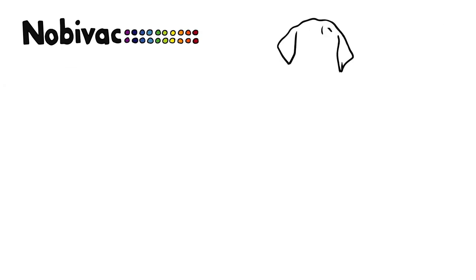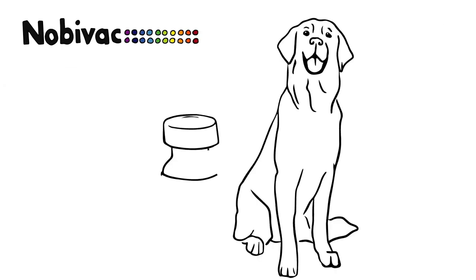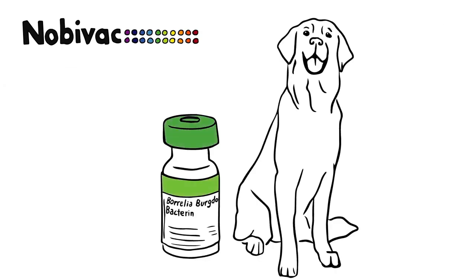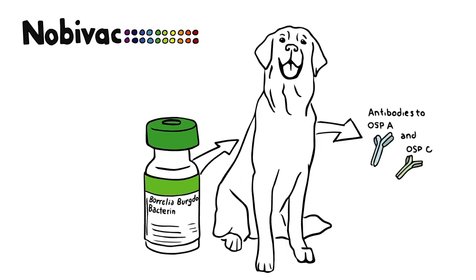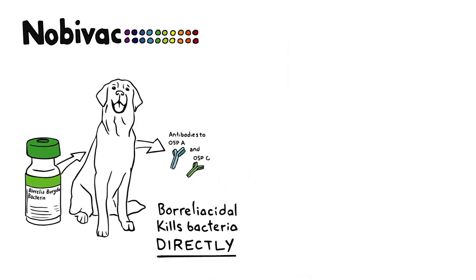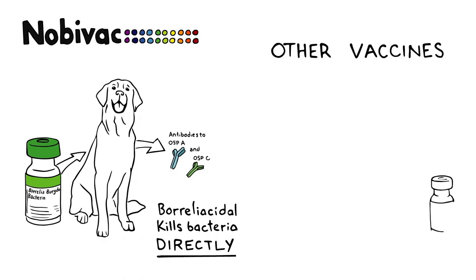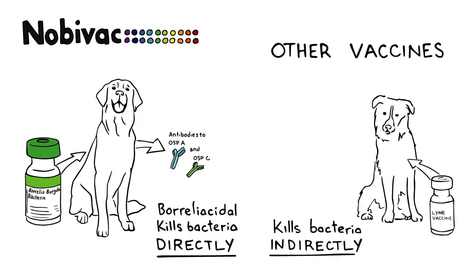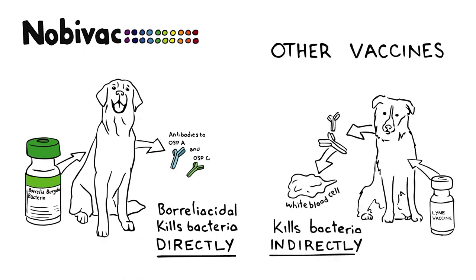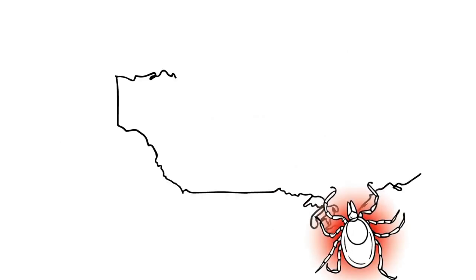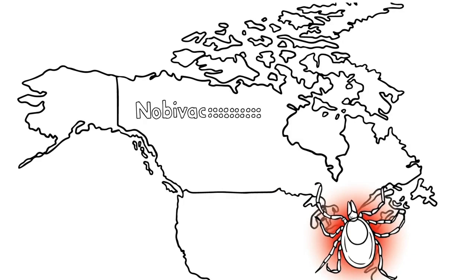In addition, Nobivac Lyme is the only vaccine that creates borreliocidal OSP-C antibodies that directly kill Borrelia burgdorferi. Other vaccines only work indirectly by creating antibodies that attract white blood cells that eventually kill the bacteria. The ticks that transmit Borrelia burgdorferi are on the move in Canada and the USA.